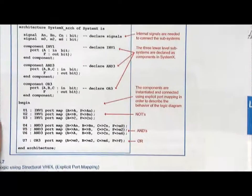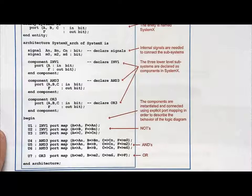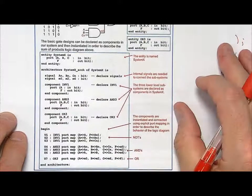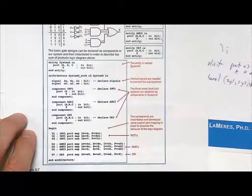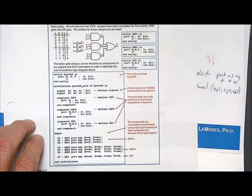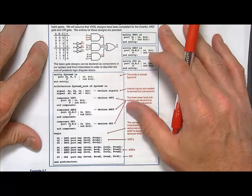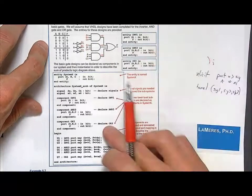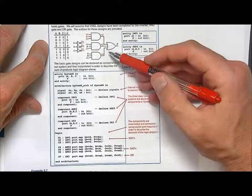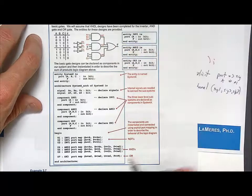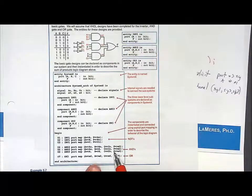So this right here, if you look at that, this right here is a structural implementation of this logic circuit. Now this is an example. You would rarely do this with basic gates. But it's to illustrate how you instantiate these lower level components and you do the wiring. Again, this is explicit port mapping.